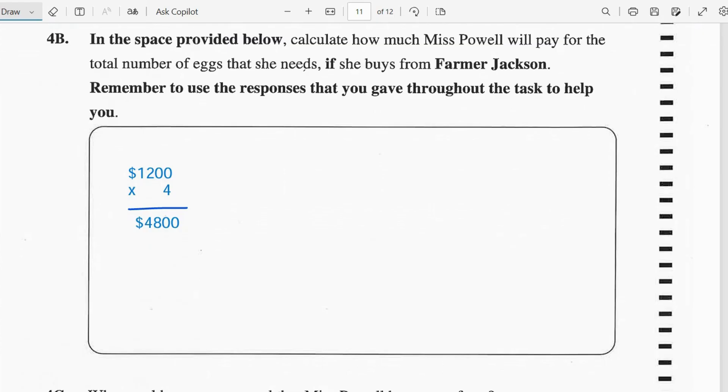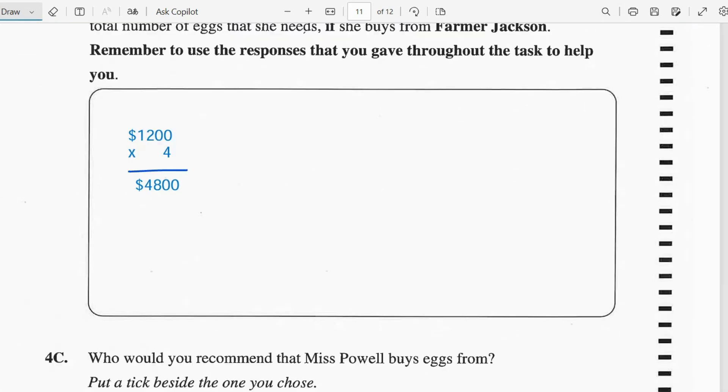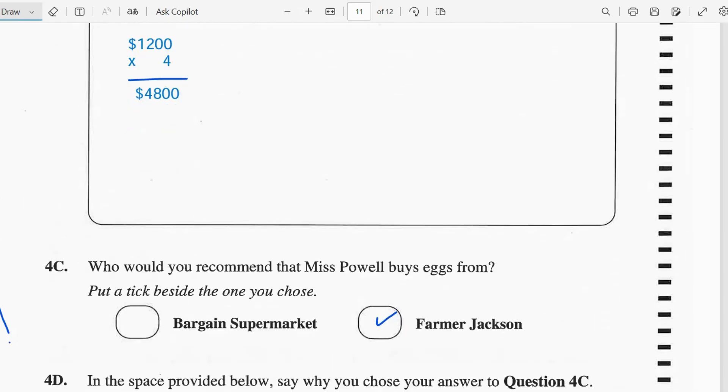If you're purchasing three or more trays, and seeing as though Ms. Powell will need four trays, that means that she'll get the discounted price which is $1,200. So we multiply that times 4 and we get $4,800.